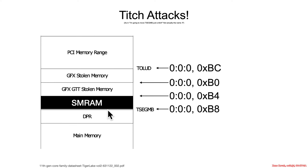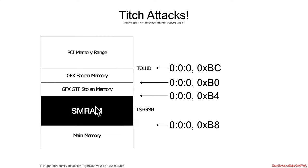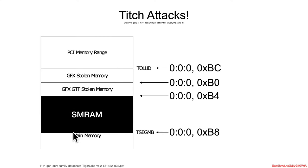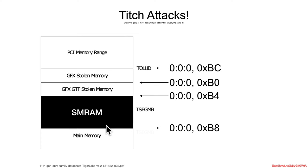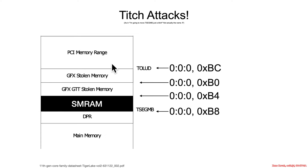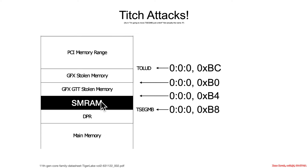Or an attacker could slide TSEG MB down into main memory, place attacker-controlled code there, push SMBase down, and as long as their code is at SMBase plus 0x8000, their attacker-controlled code would run there. So the thing we really care about is the range between TSEG MB and the graphics stolen memory — that is our TSEG, that is our SMRAM.